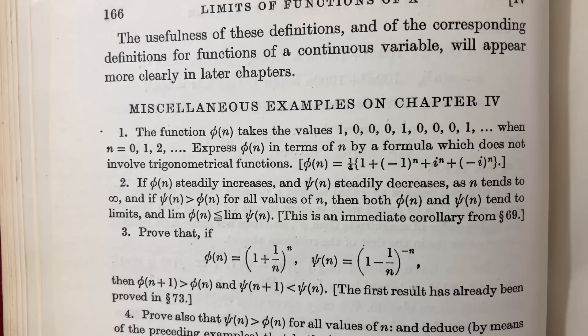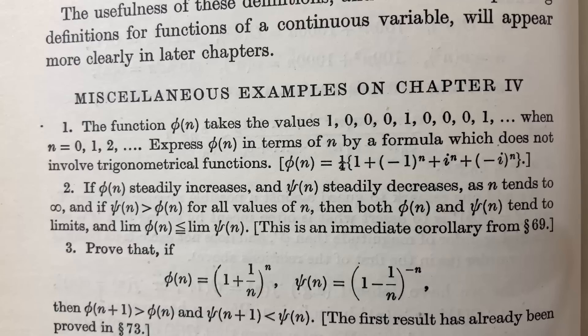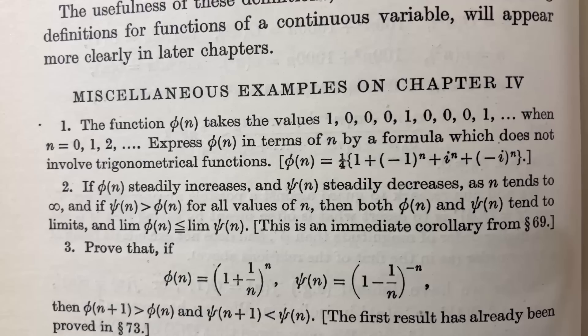This book has really interesting exercises. He calls them miscellaneous examples. Here are the ones for chapter 5, and you notice that sometimes he provides hints or solutions. The function phi of n takes the values 1, 0, 0, 0, 1, 0, 0, 1, dot dot dot, when n equals 0, 1, 2, etc. Express phi of n in terms of n by a formula which does not involve trigonometrical functions, and he gives you the solution there. But he doesn't show you how to come up with it.